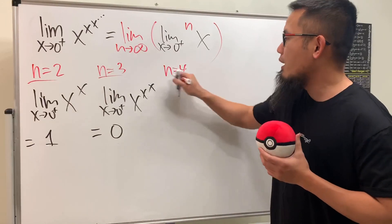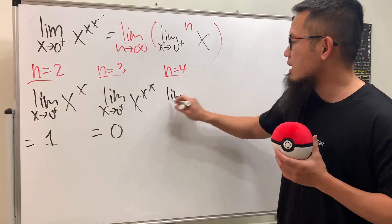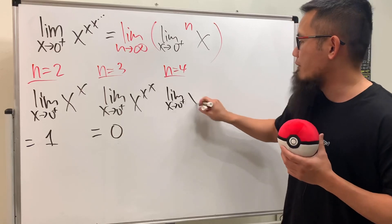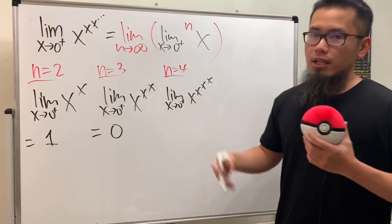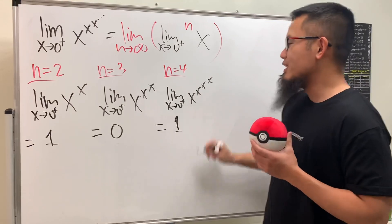Next we do n equals 4. This is the limit as x approaches zero plus: x to the x to the x to the x. Go ahead and do this on your own - you get 1.